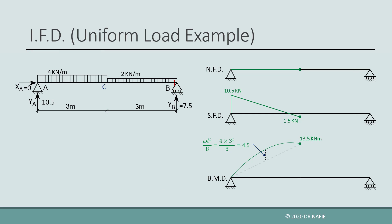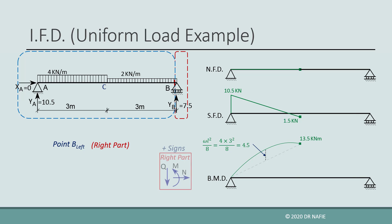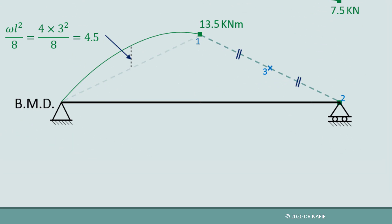Next, we move to the point on the left of the roller support at B. For this location, we will work on the right part and display the sign convention for the right part. The normal force will be zero. Only one vertical force is present — the reaction YB with the value of 7.5 kilonewtons upwards — so the shear will be negative 7.5 kilonewtons, because positive on the right side is downwards. The value of the shear is drawn on the diagram at point B and connected to the value at point C with a straight line. The bending moment at B will be zero because all the forces in the right part pass through point B. Next, we connect the moment at point C with that at point B using a parabola in the same way as detailed previously between A and C.